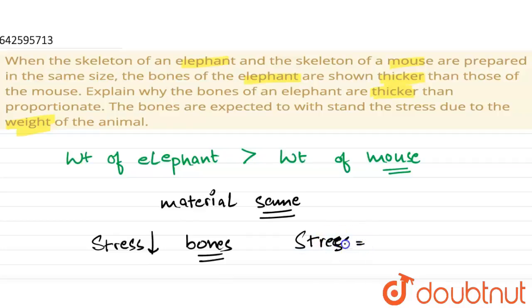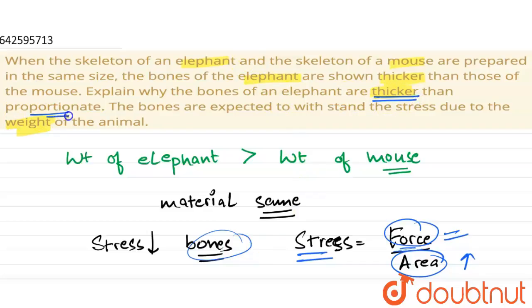We cannot reduce the force because the weight of the elephant will remain constant. We cannot decrease its weight, so we increase its area to compensate for the stress acting on the bones. Therefore, the bones of the elephant are thicker than proportionate.